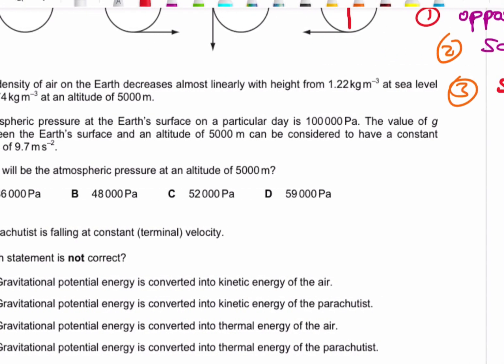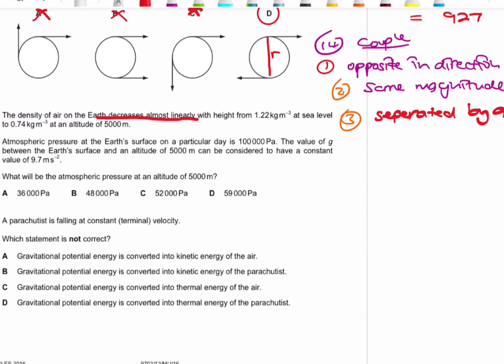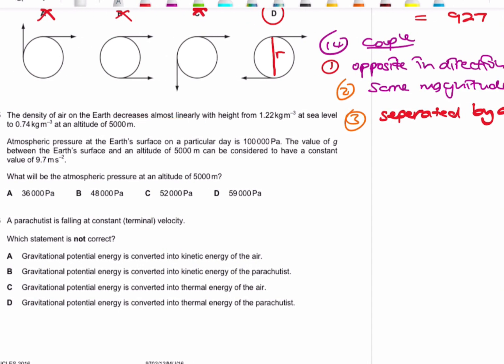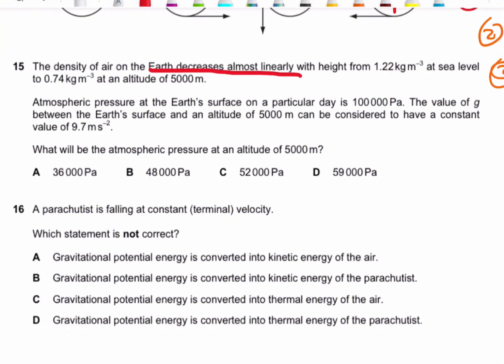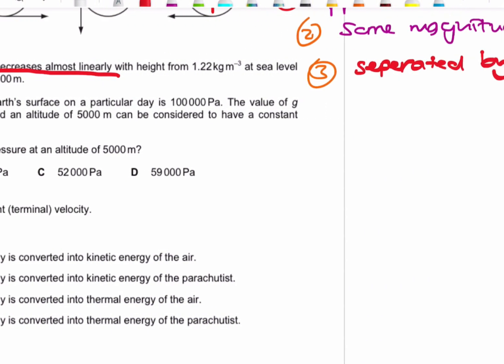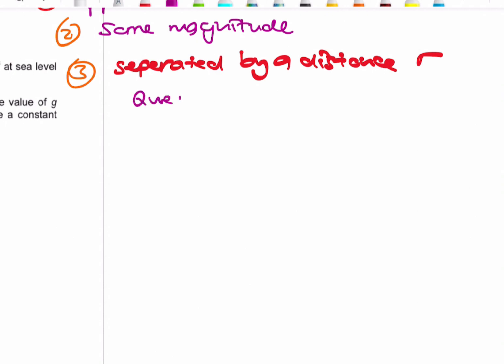Question 15: the density of air decreases almost linearly with height — it's almost linearly, which is very important. Pay attention to details and particular words within the question. The density goes from 1.22 to 0.74 at an altitude of 5,000 meters. Whenever you see complicated questions, I highly recommend that you draw diagrams. So for question 15, let's draw a diagram and analyze it together.